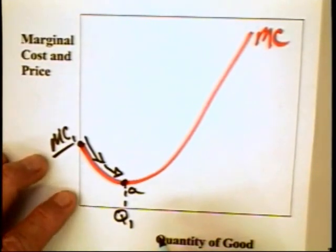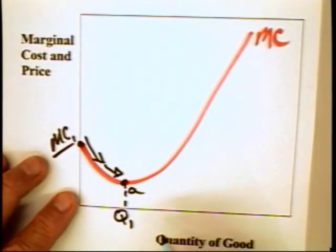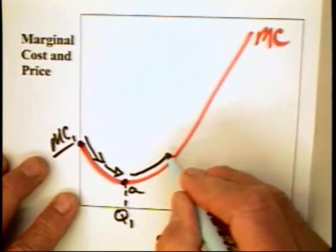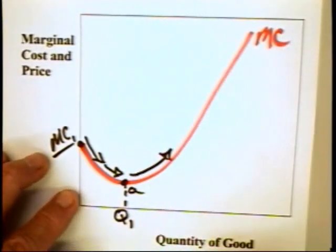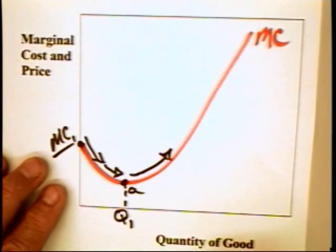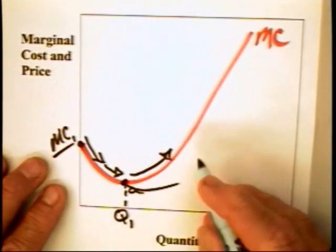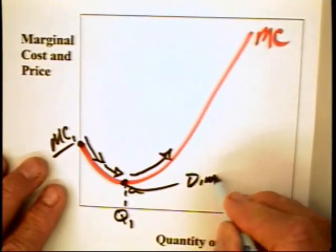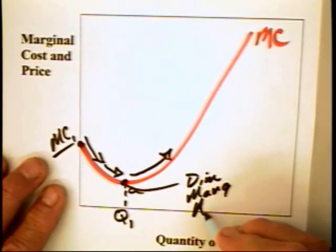The additional output from each additional labor input is going to diminish. If you get less and less additional output per labor applied to the production process, it stands to follow that the marginal cost of production will be going up. This is the point of diminishing marginal returns.